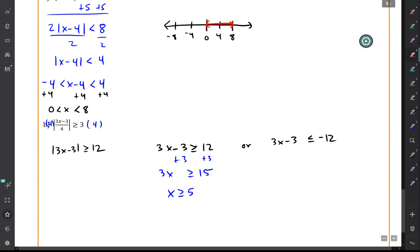In the second case, when you add 3 to both sides, you get that 3x is less than or equal to negative 9. So x is less than or equal to negative 3.